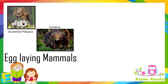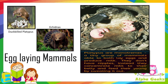There are also egg-laying mammals, which are primitive mammals that lay eggs and then suckle the young ones when they hatch. Examples of egg-laying mammals are the duck-billed platypus and echidnas. Platypuses are monotremes — a tiny group of mammals able to both lay eggs and produce milk. They don't have nipples; instead, they secrete milk through their belly and feed the young ones by sweating it out.